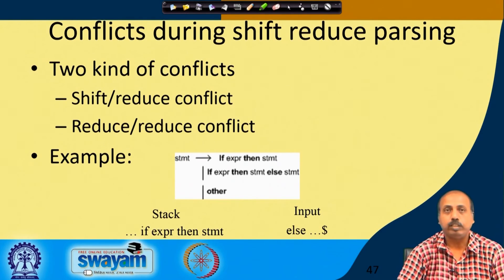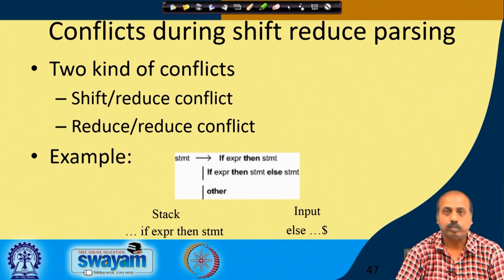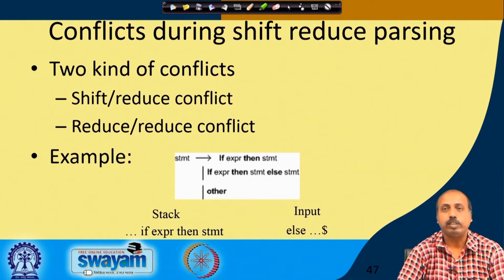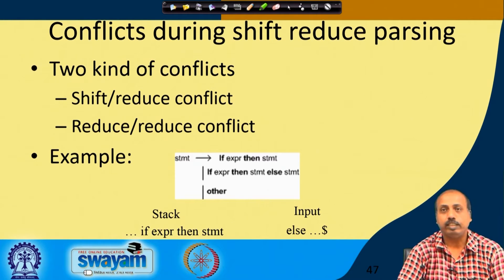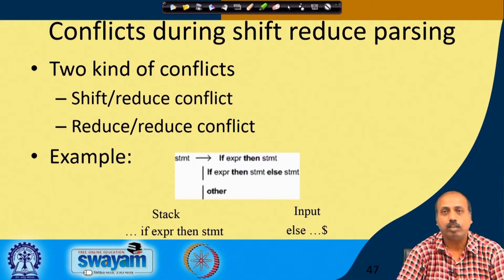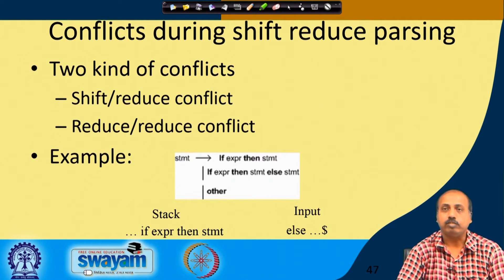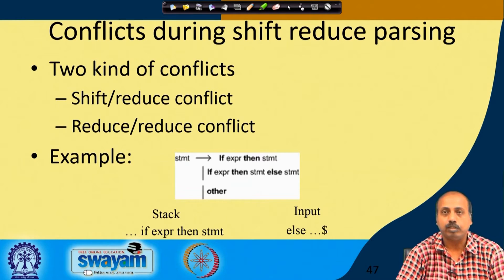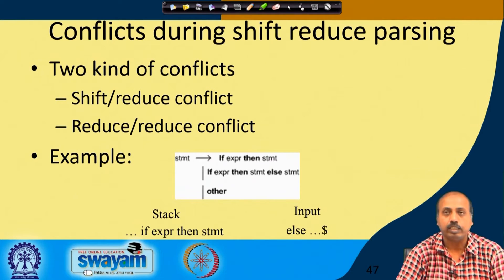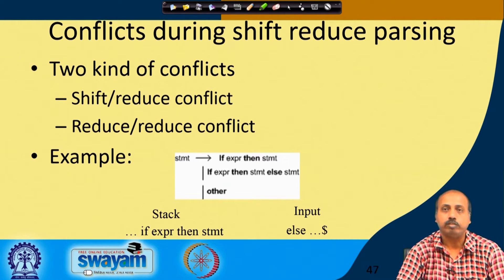In our last class we were looking into shift-reduce parsing policies. We have seen that there are 4 actions that can occur with shift-reduce parsing: shift, reduce, accept, and error. These were the 4 operations that a shift-reduce parser will do.